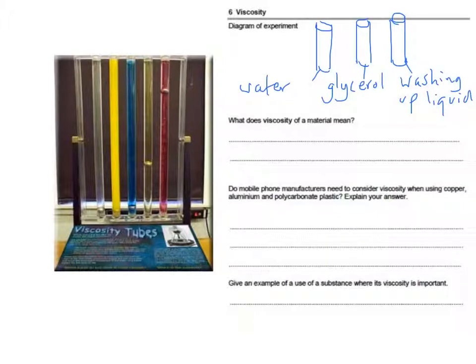The diagram for our simple experiment that we did in class was something like this. Only these three liquids were tested to show the idea of viscosity. Viscosity is how runny a liquid is, and a liquid that has a high viscosity is a very thick liquid indeed.